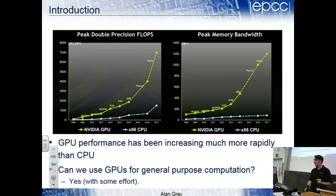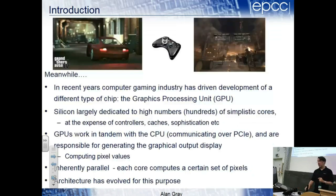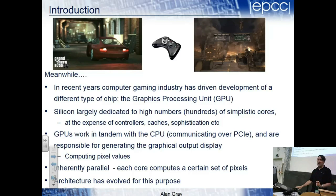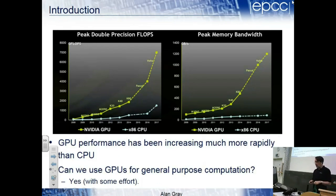On a games machine, general purpose computing is done by a standard CPU, but you have a GPU for graphics. The nice thing about graphics is it's intrinsically parallel - generating pixels in one part of the image is largely independent of another, so you can parallelize naively over pixels. In a modern display you have millions of pixels. The architecture of GPUs has really evolved for this purpose of playing games.